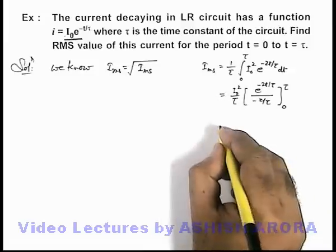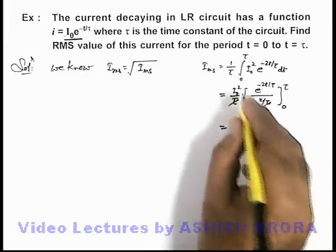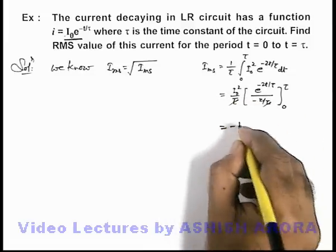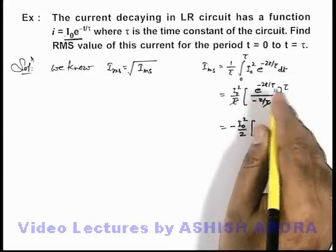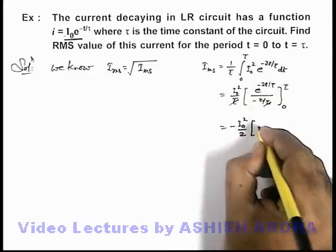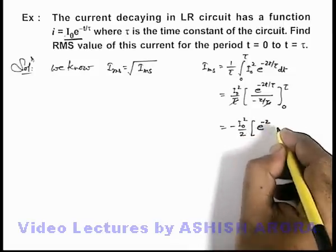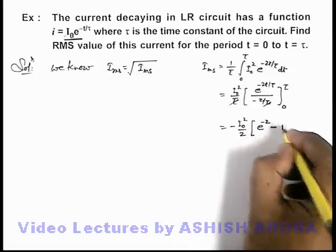And further on simplifying here, this tau gets cancelled out and what we are getting is minus i-not square by 2. On substituting the limits, if I substitute t equal to tau, it'll be e to power minus 2 minus e to power zero, which will be 1.